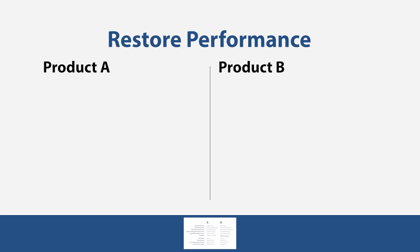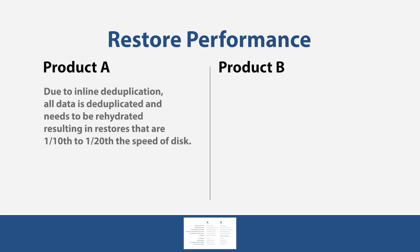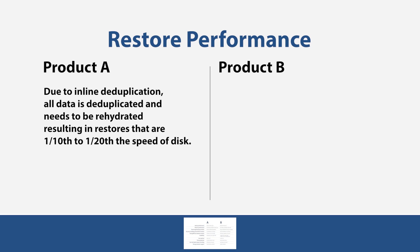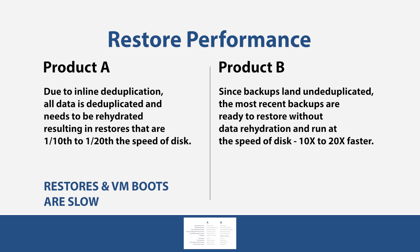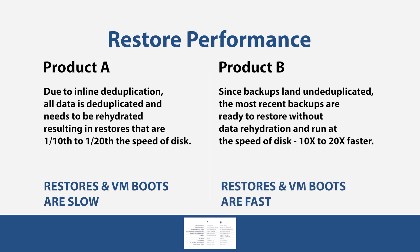Restore performance: Product A, due to inline deduplication, has all data deduplicated and needing to be rehydrated, resulting in restores that are one-tenth to one-twentieth the speed of the disk — restores and VM boots are slow. Product B, since backups land undeduplicated, the most recent backups are ready to restore without data rehydration and run at the speed of the disk, 10 to 20 times faster — restores and VM boots are fast.